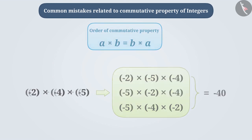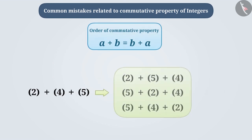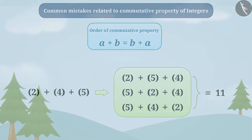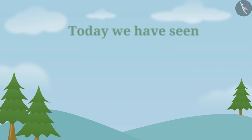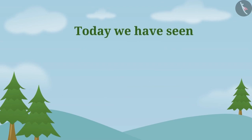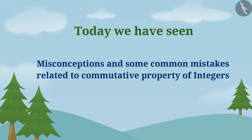Similarly, the order of addition of more than two integers can also be changed. By changing the order, the result will still remain the same. Today, we saw some misconceptions and some common mistakes related to the commutative property of integers.